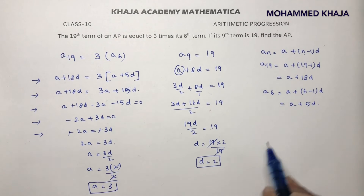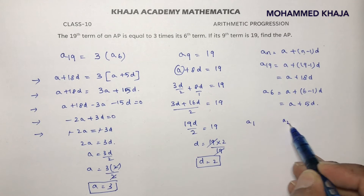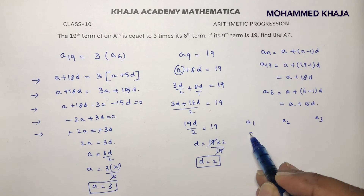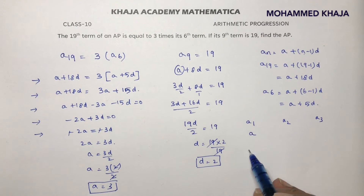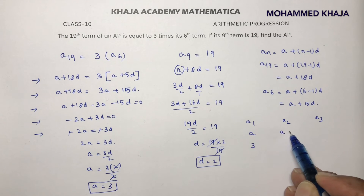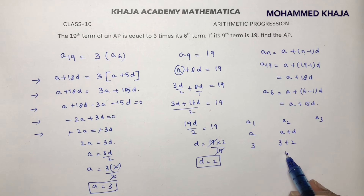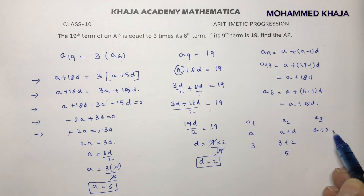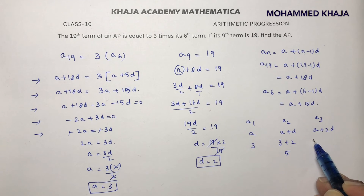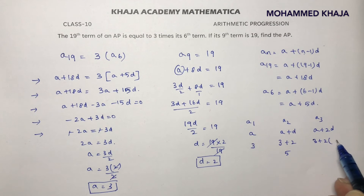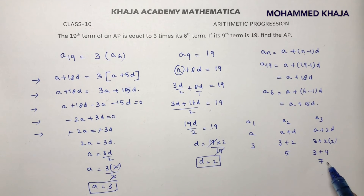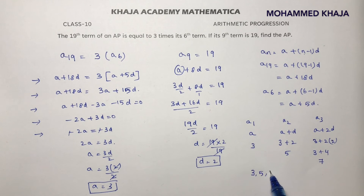Now we have the value of A and D. We need to find the first term, second term, and third term. The first term is A, which is 3. The second term is A plus D, which is 3 plus 2 = 5. The third term is A plus 2D, so 3 plus 2 times 2 = 3 plus 4 = 7. Therefore, the AP is 3, 5, 7, and so on.